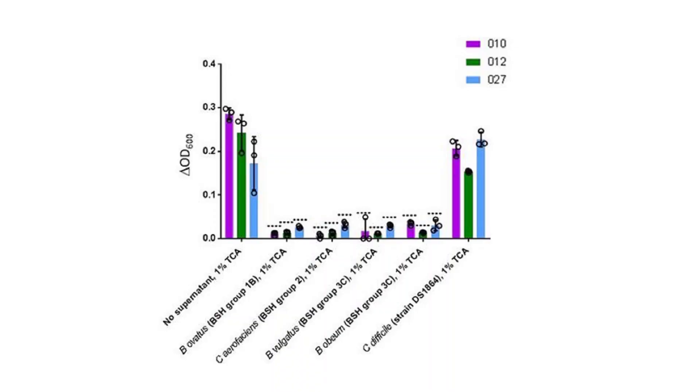Whilst this association between successful FMT for recurrent CDI and the restoration of bile salt hydrolase-producing bacteria was of interest, we needed further work to demonstrate that this was truly a mechanism underpinning the efficacy of FMT. We went on to perform batch cultures. We first incubated a range of BSH-producing bacteria, which we had seen enriched in the gut microbiota between pre- and post-FMT, in a taurocholate-rich media to simulate the distal gut in recurrent CDI. After overnight incubation, the used media was filter sterilized and incubated with C. difficile spores. When BSH-producing bacteria were present before the spore and taurocholic acid interacted, little to no germination was measured. Using mass spectrometry confirmed that the taurocholic acid had been degraded to cholic acid by the BSH-producing bacteria.